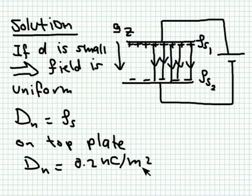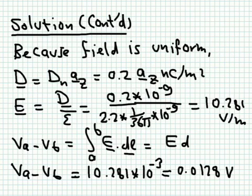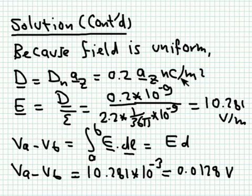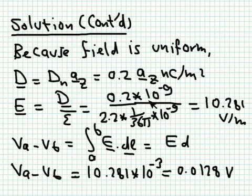Since the field is uniform, D at the interface equals D everywhere, which equals the surface charge density. So D = 0.2 az nC/m², where z points from the positive plate to the negative plate. From D we get E: E = D/ε = D/(2.2 ε₀) = D/(2.2 · (1/36π) × 10⁻⁹). The 10⁻⁹ terms cancel, giving 36π/11 ≈ 10.281 V/m.